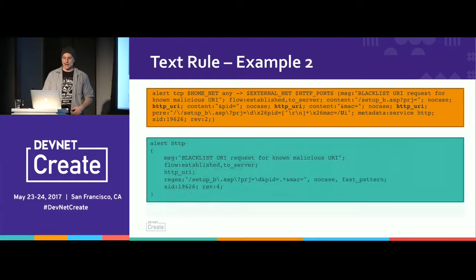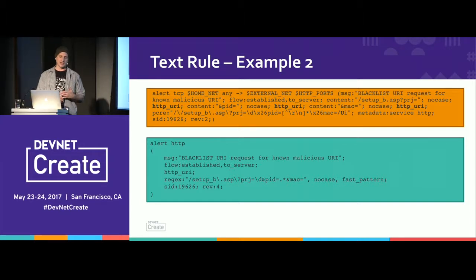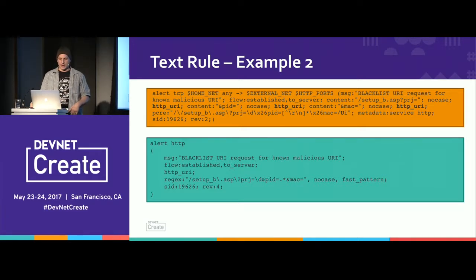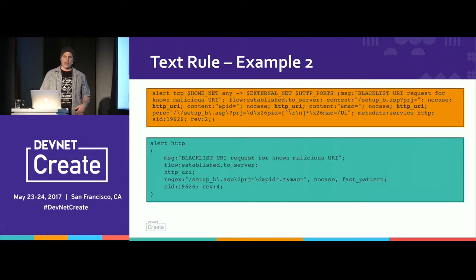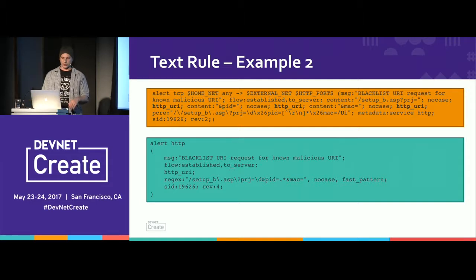We can go even further using Intel's Hyperscan library. There's a plug-in for fast pattern detection using Hyperscan, and also a regex rule option. For this particular rule, all the contents and the PCRE were applied to the HTTP_URI, so we can make a single regex — very much like PCRE but not quite as capable, though very high performance. We can designate it as a fast pattern, meaning that if it matches, there's virtually nothing else to do. This is a very high performance solution.